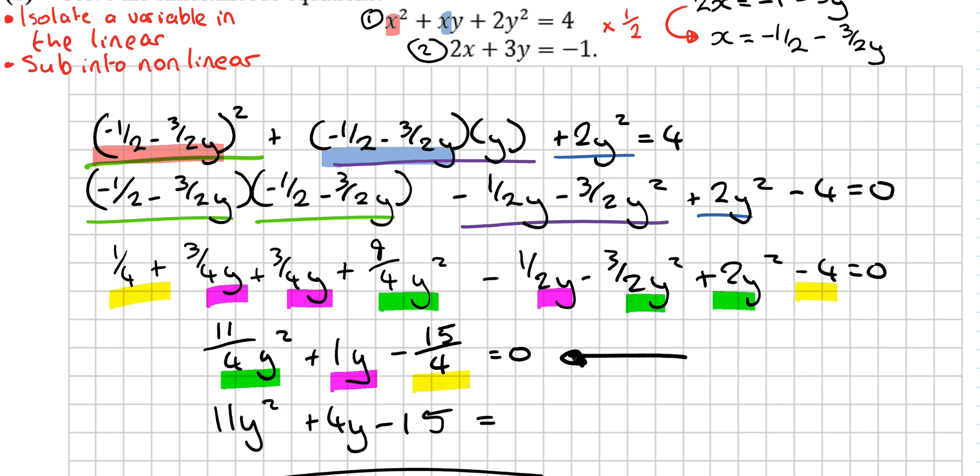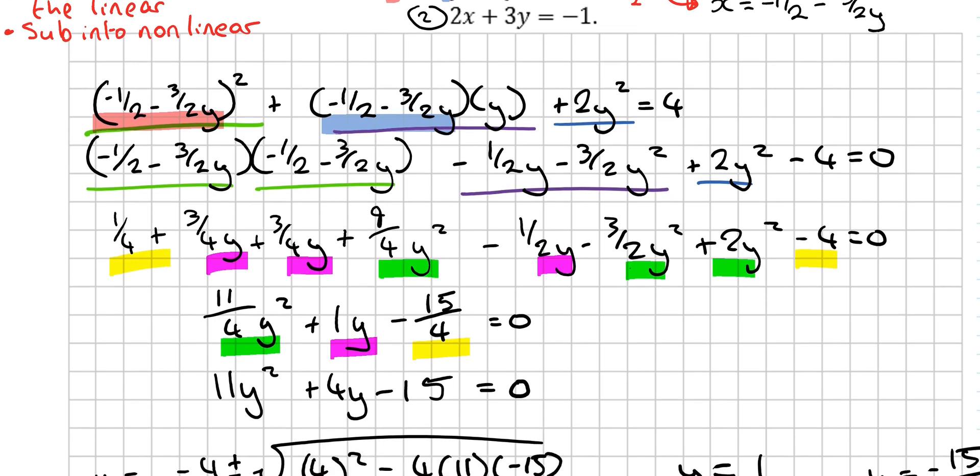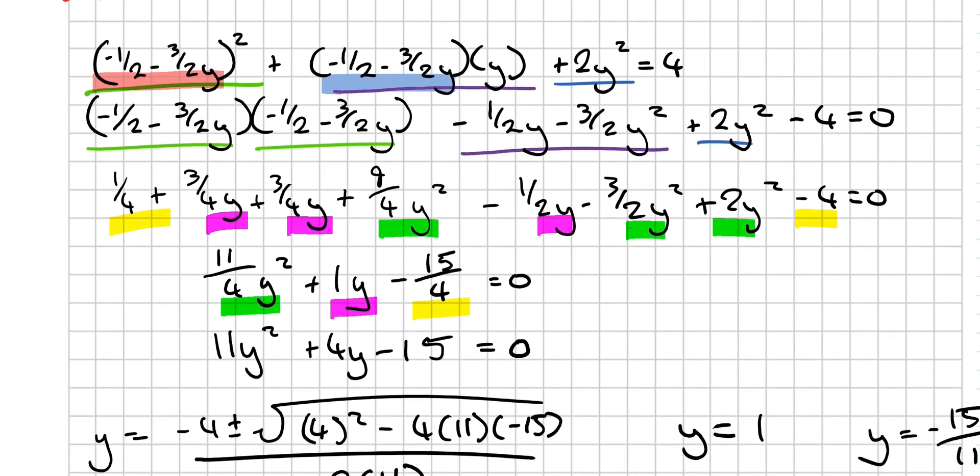And now, what do I not like at this point? I don't like the fact that there's a fraction. So I multiply everything by 4. I include the right hand side. Multiplying that by 4. But 0 by 4 is 0. So I'm pretty okay with that. Quadratic equation.